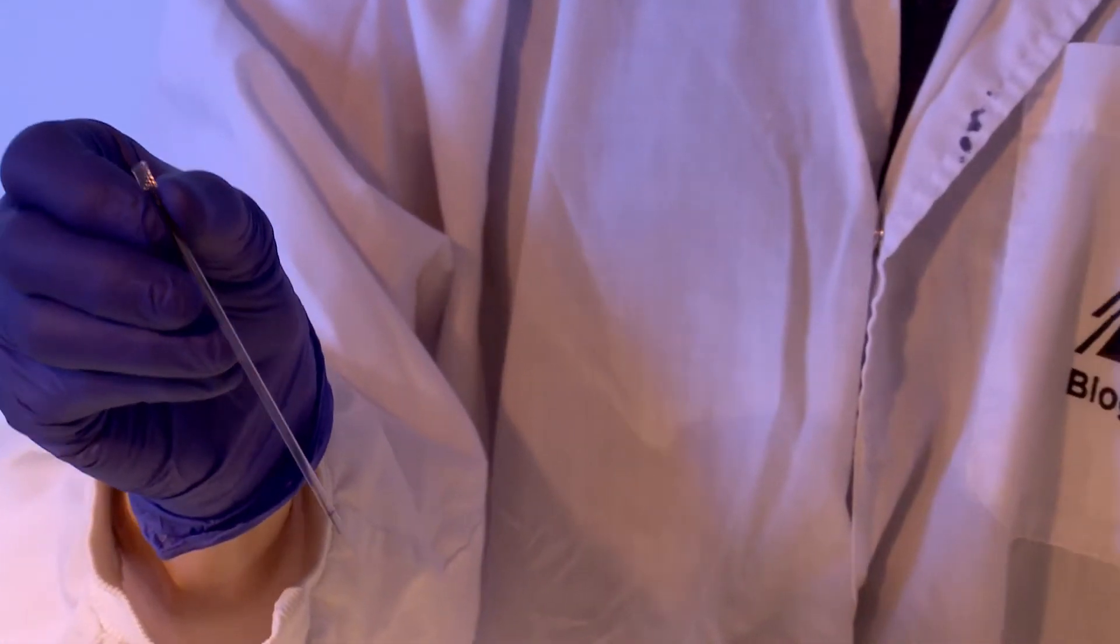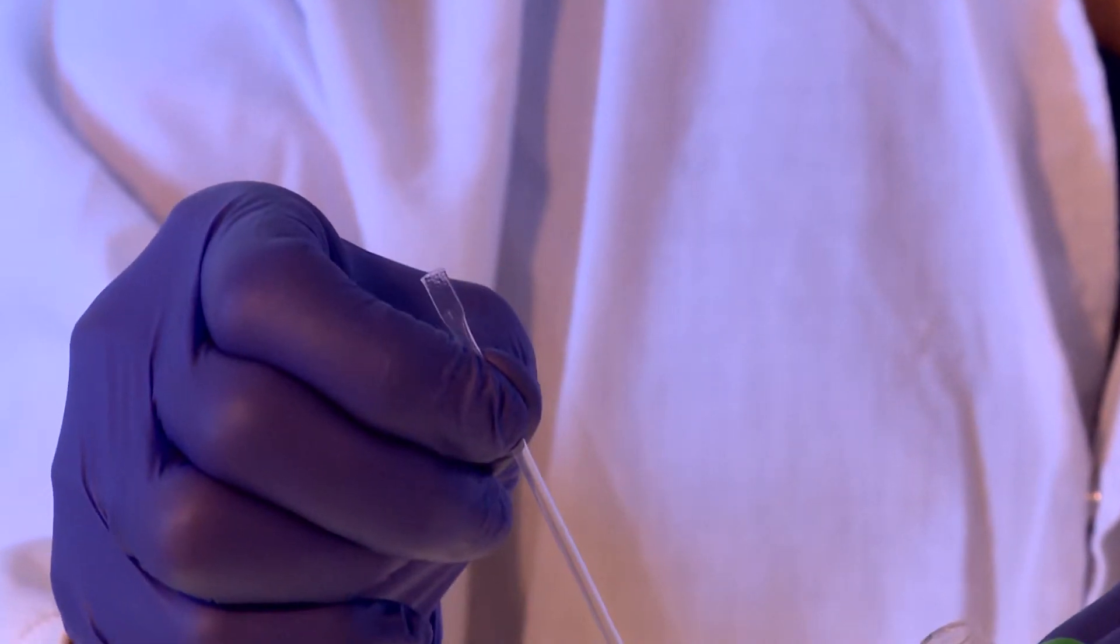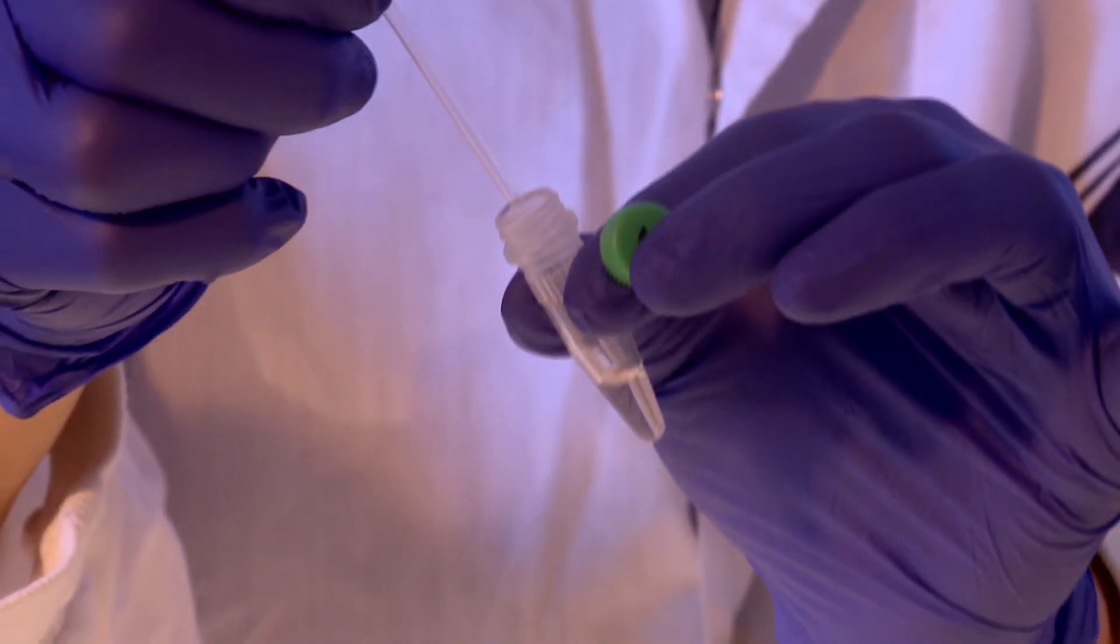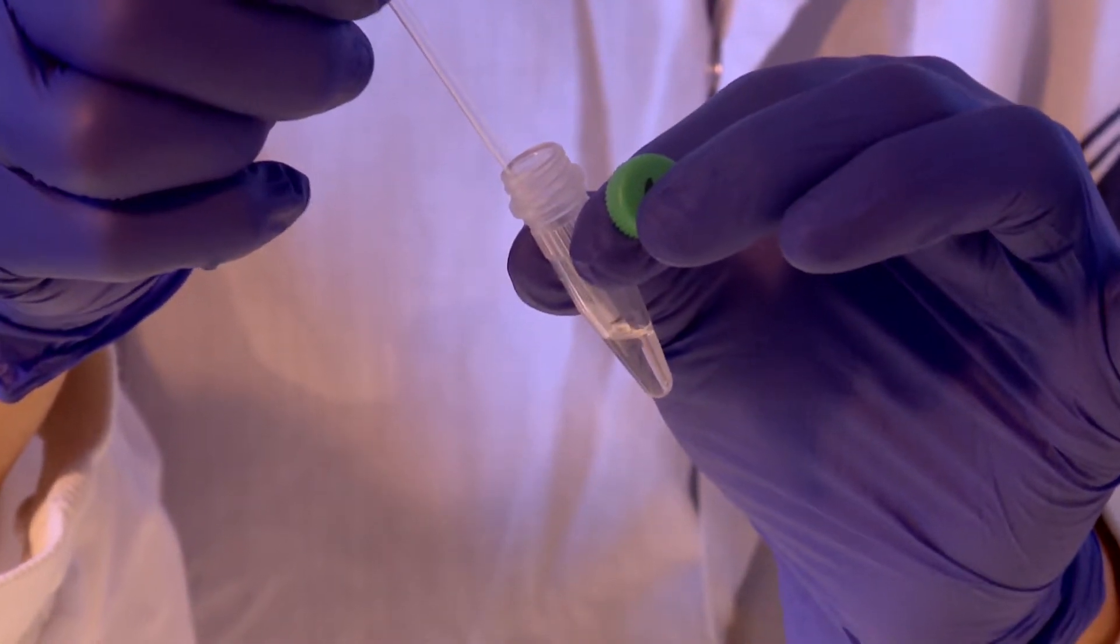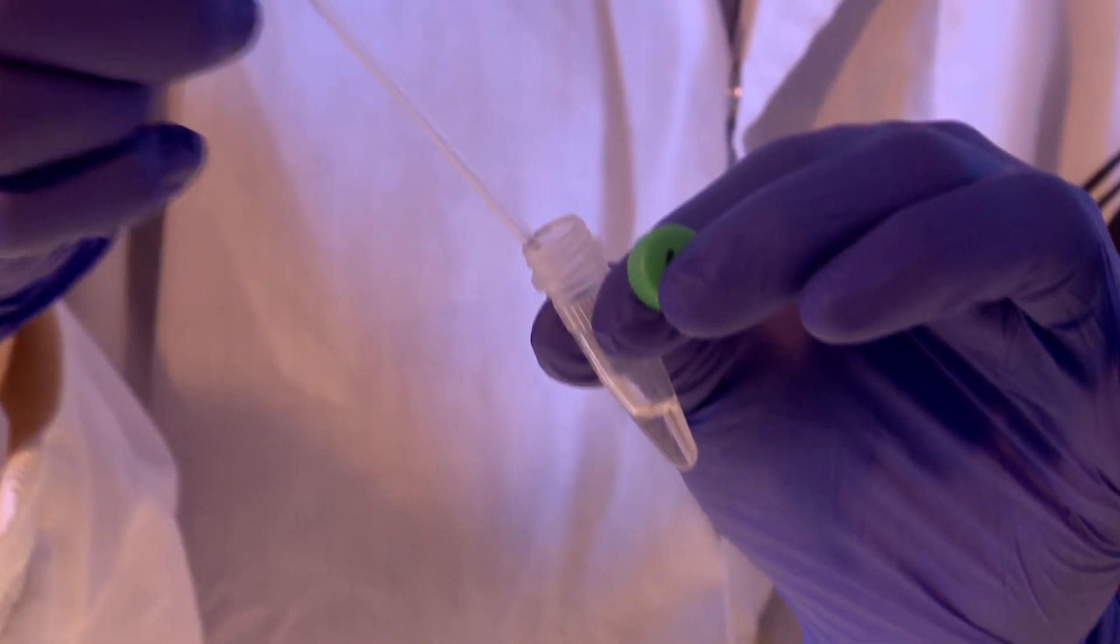This is performed by first depressing the capillary tube while outside of the DNA sample at a point distal to the black line tip, then placing the tip of the capillary tube into the DNA sample and releasing the pressure until liquid is drawn up to the level of the black line.